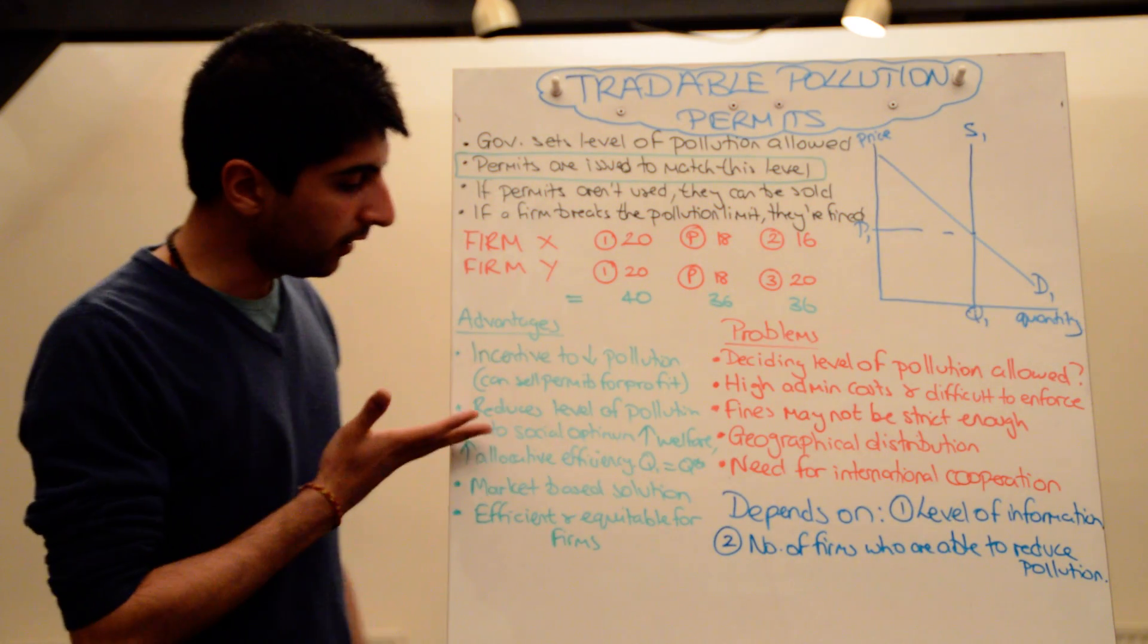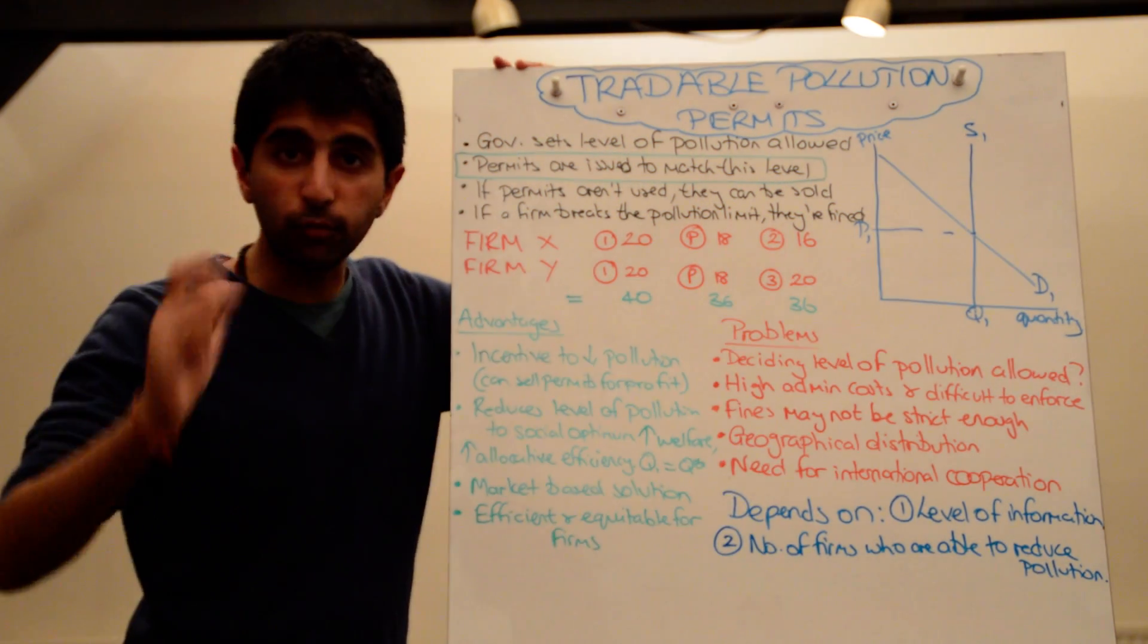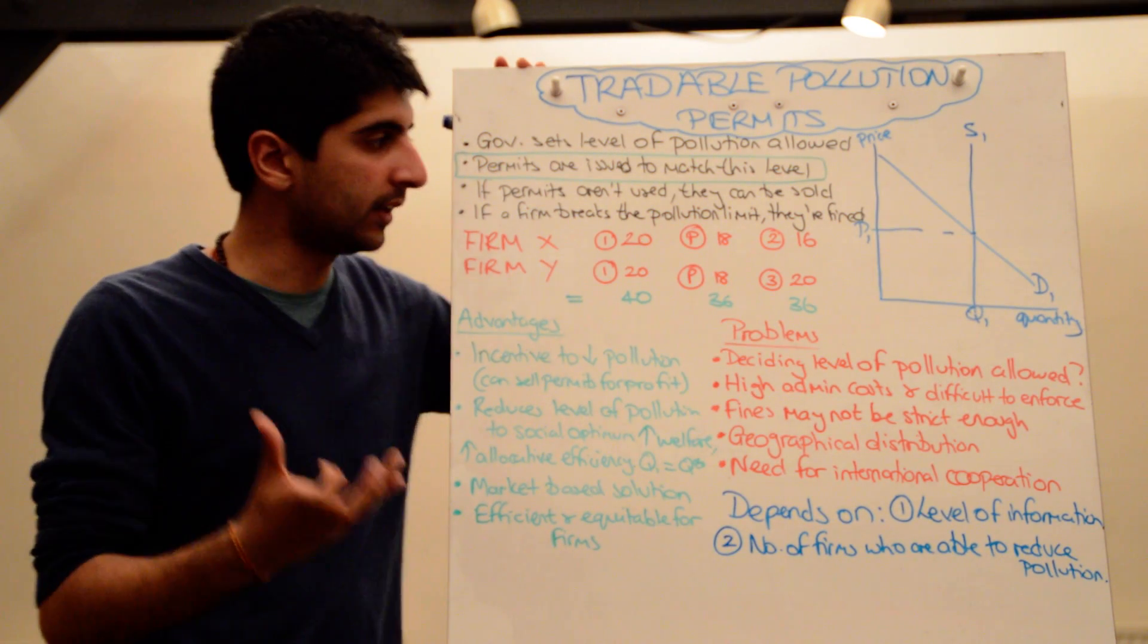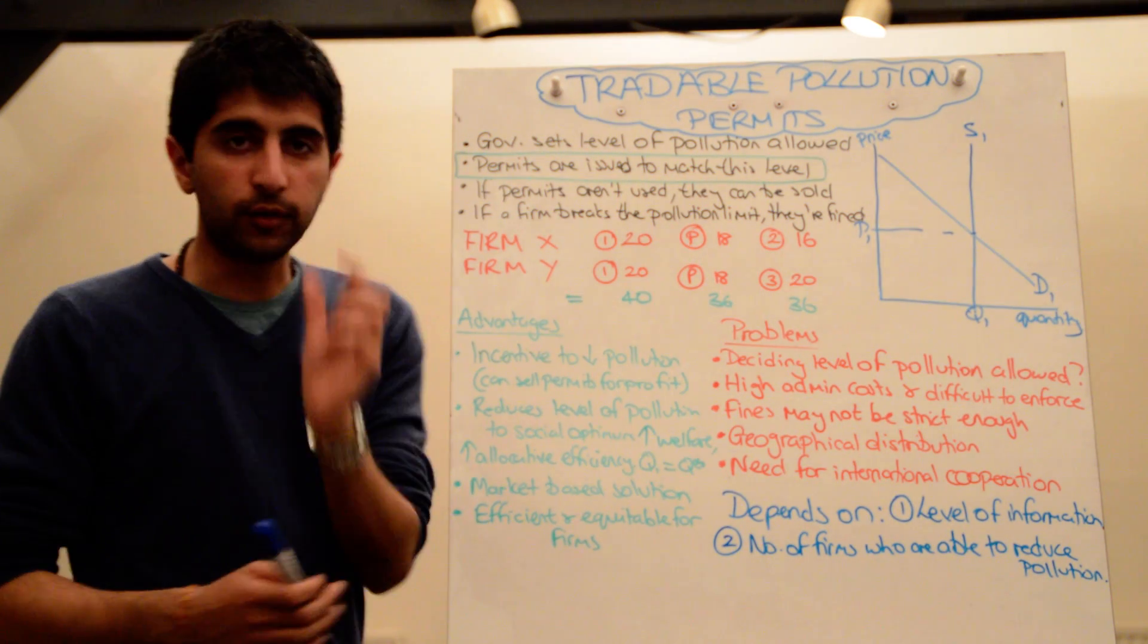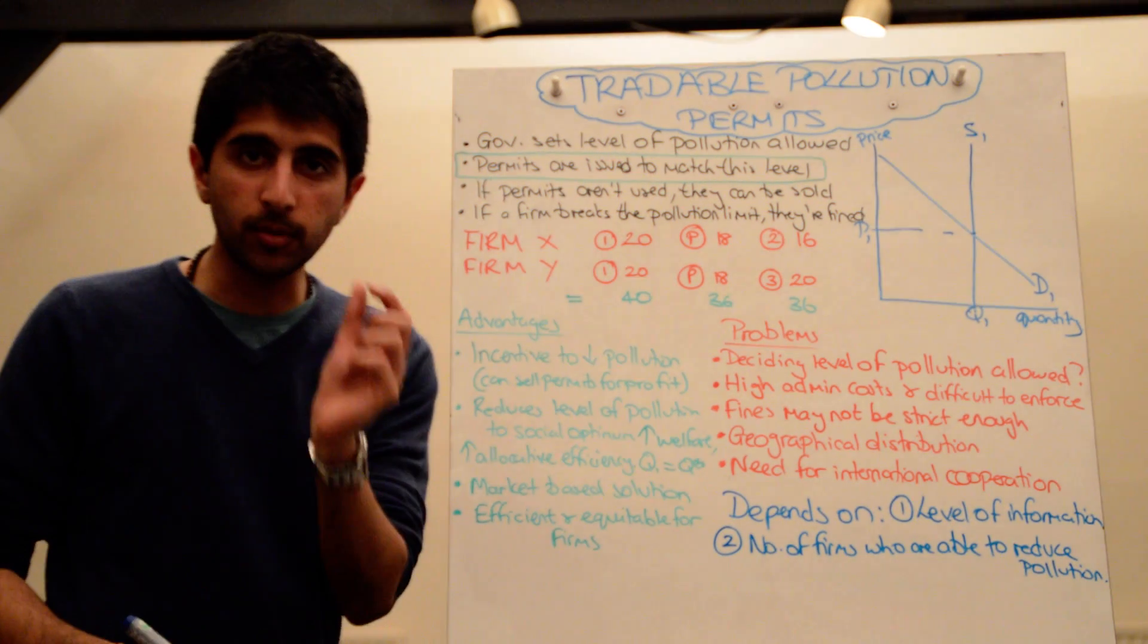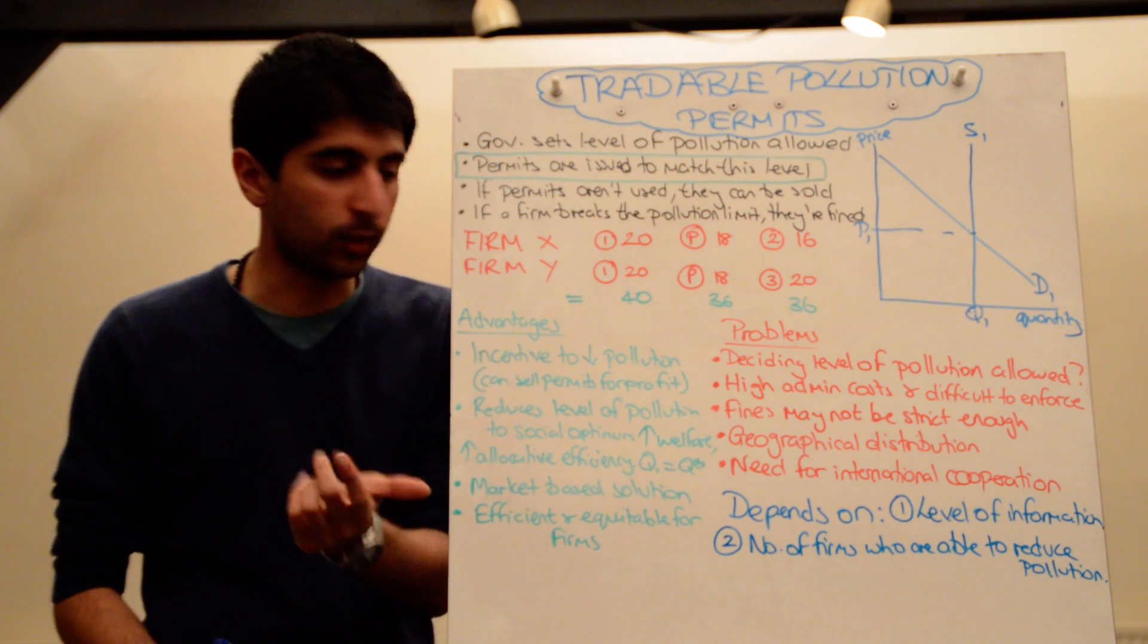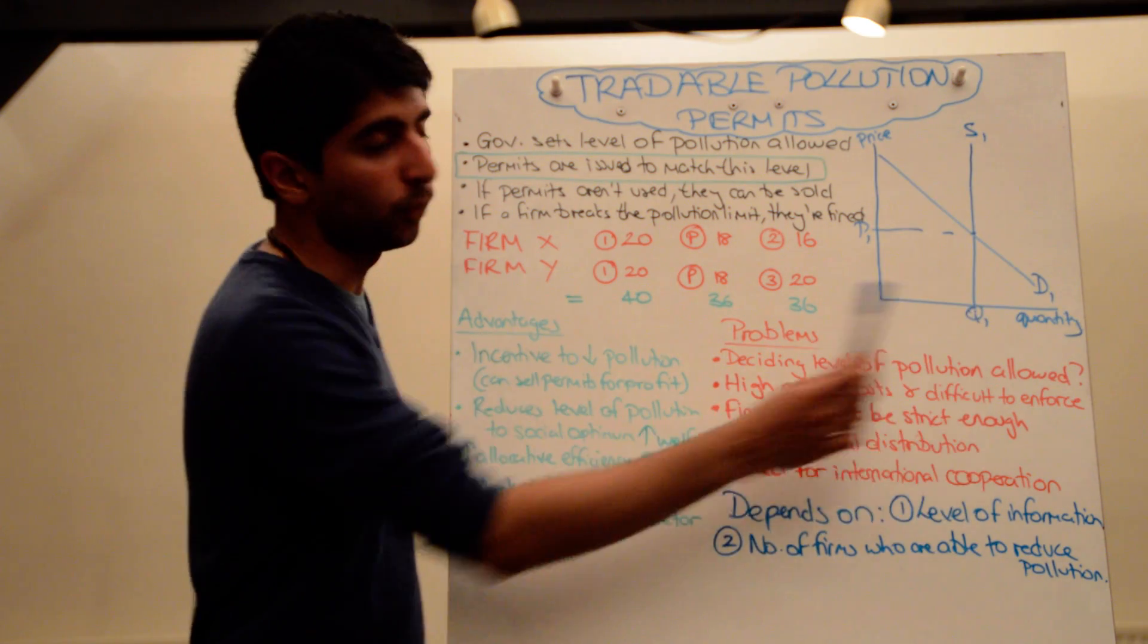In terms of solving the market failure, there are some big benefits here. By the government setting the level of permits, if it does it right, it can set Q1 equal to Q star in our market failure diagram, equal to the official level of resource allocation, where there is the socially optimum level of pollution occurring in the market. If it does it correctly, the social optimum will be reached, welfare will be maximized, and allocative efficiency will occur, which are all good things. So Q1, hopefully, will equal Q star.